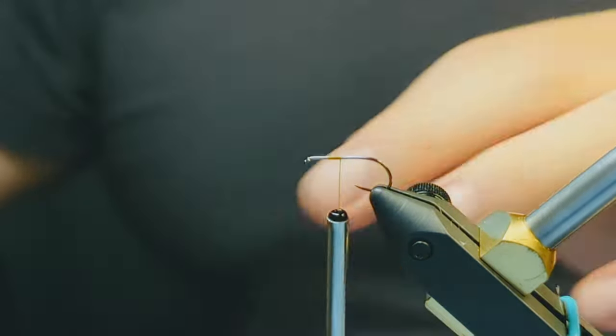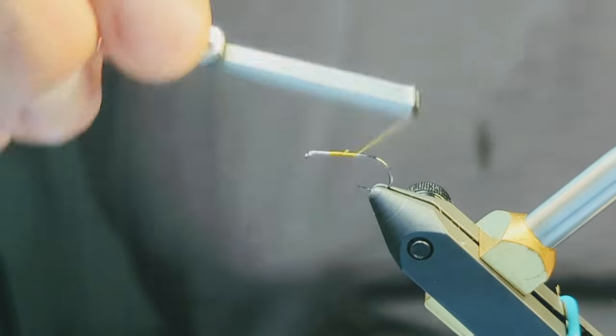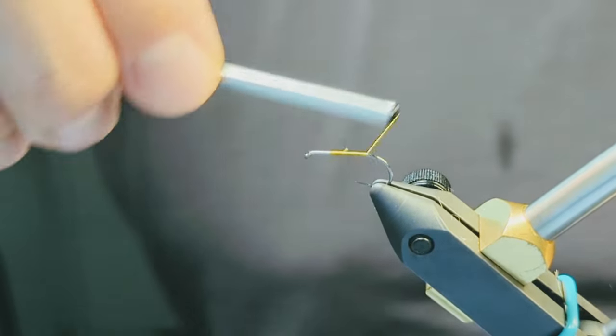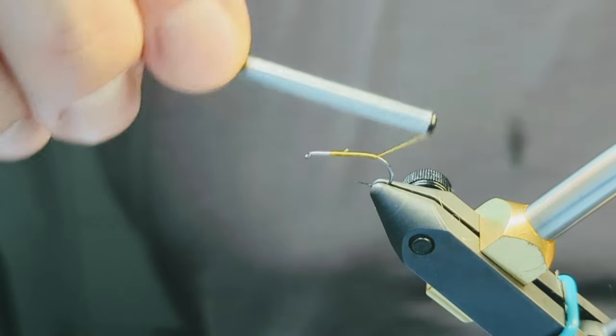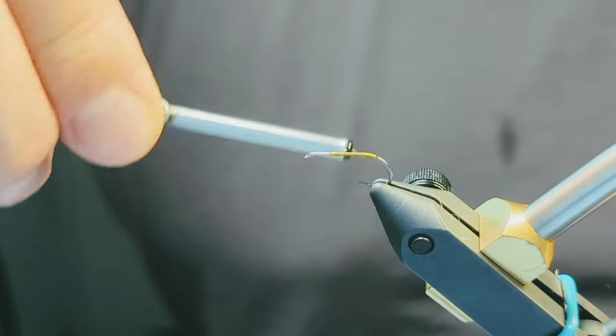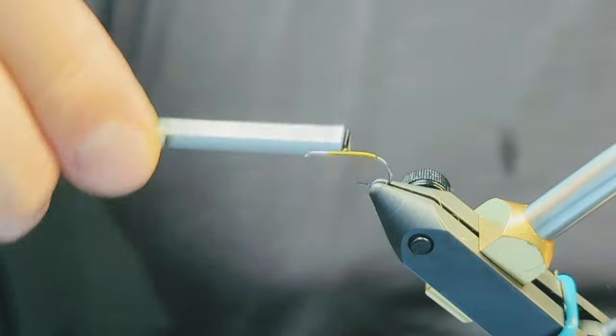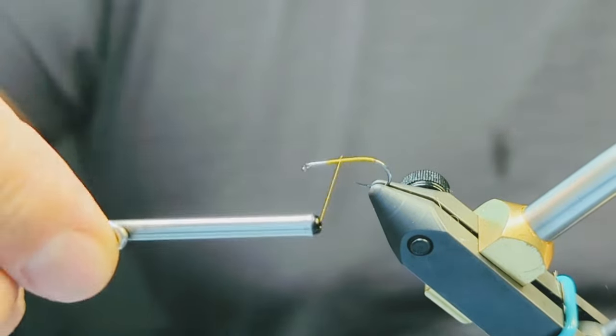You can tie this on whatever straight shank hook you'd like. A wet fly or nymph hook will sink a little more quickly and a dry fly hook will float a bit before submerging. I have a size 12 on and I'm starting with olive thread.